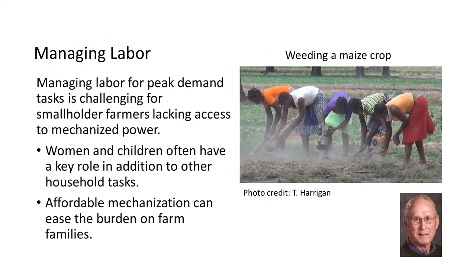Managing human labor for high-demand tasks such as planting, weed control, and harvesting is challenging for smallholder farmers without access to mechanized power. Women and children often have key roles in these farm activities in addition to other household tasks such as childcare, preparing meals, fetching water, and other normal daily activities. Affordable mechanization can ease the burden on farm families.